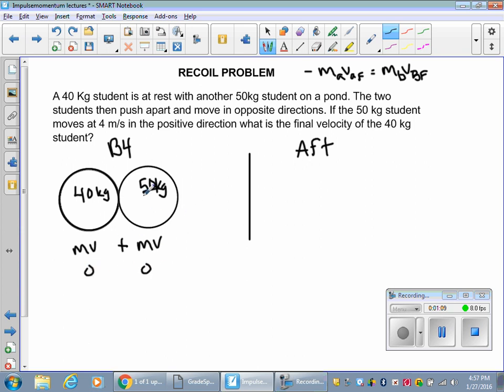Okay. The two students then push apart and move in opposite directions. All right, so that's going to look like 40 kilograms still. They haven't changed mass because this is a closed system. 50 kilograms. They move in opposite directions.